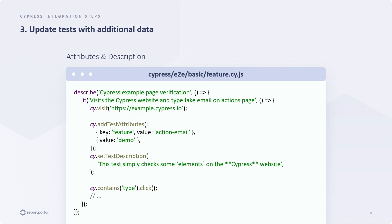How do we add attributes and a description? It's quite simple. We just need to use a custom command within the tests. Here we've included two attributes. They usually follow a key-value format, but you can also use just a value. The description is just a string that outlines what the test case entails. Now let's head over to the project and implement these changes in our tests.